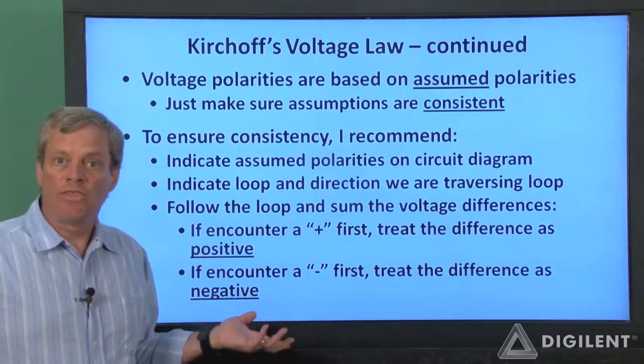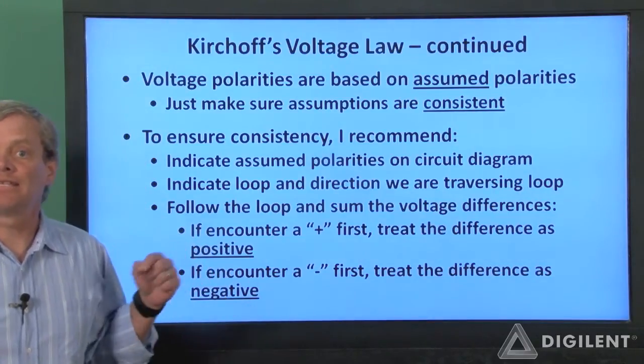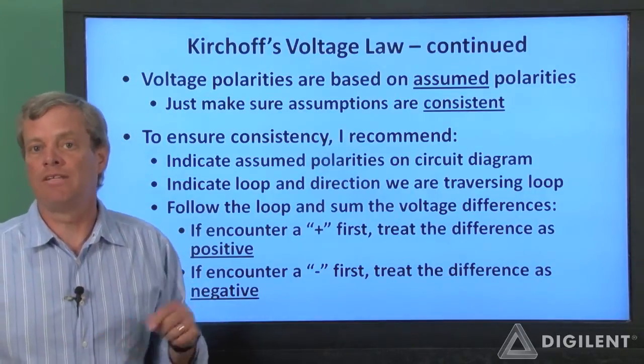As long as you're consistent with this approach, all your KVL equations should turn out just fine and the signs on the voltages you determine will indicate the actual voltage polarities in the circuit.